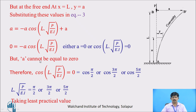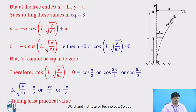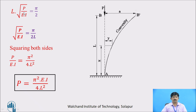For this term to be zero, either A must be zero or cos(L√(P/EI)) must be zero. But A cannot be zero because there is a deflection at the free end due to the crippling load. Therefore cos(L√(P/EI)) equals zero, which holds for values π/2, 3π/2, or 5π/2. Taking the least practical value: L√(P/EI) equals π/2. Squaring both sides, P/EI equals π²/(4L²), therefore P equals π²EI/(4L²). This is the crippling load.